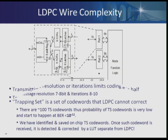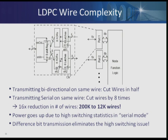Without getting too much into wire complexity, we can go from 200K wires to 12K wires if we do serial communication in a bidirectional fashion. However, the toggle rate significantly goes up. The way to get around that is to do difference communication — only sending the difference of the messages from every iteration to every iteration.